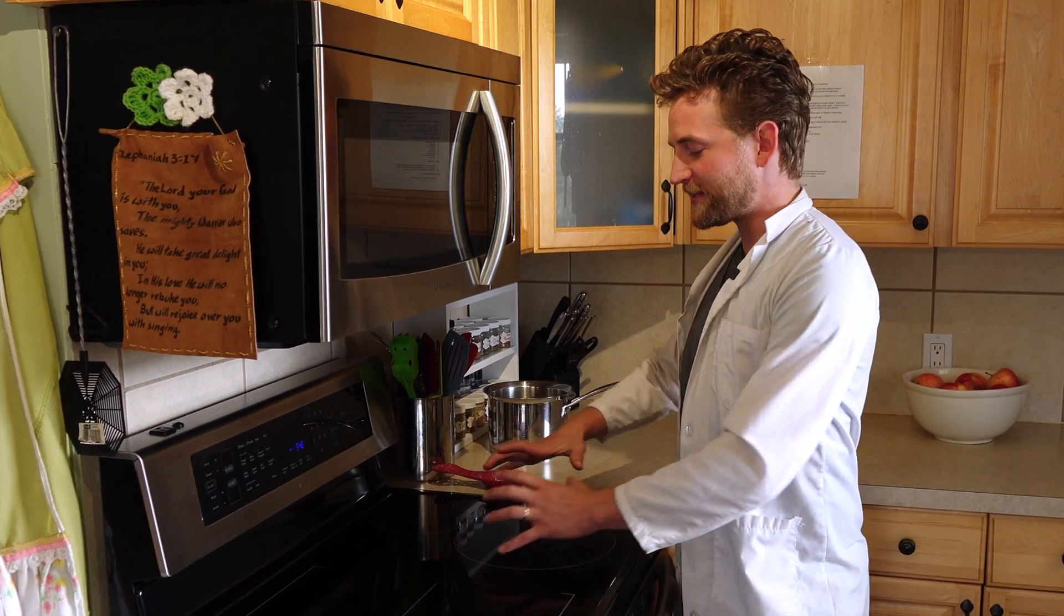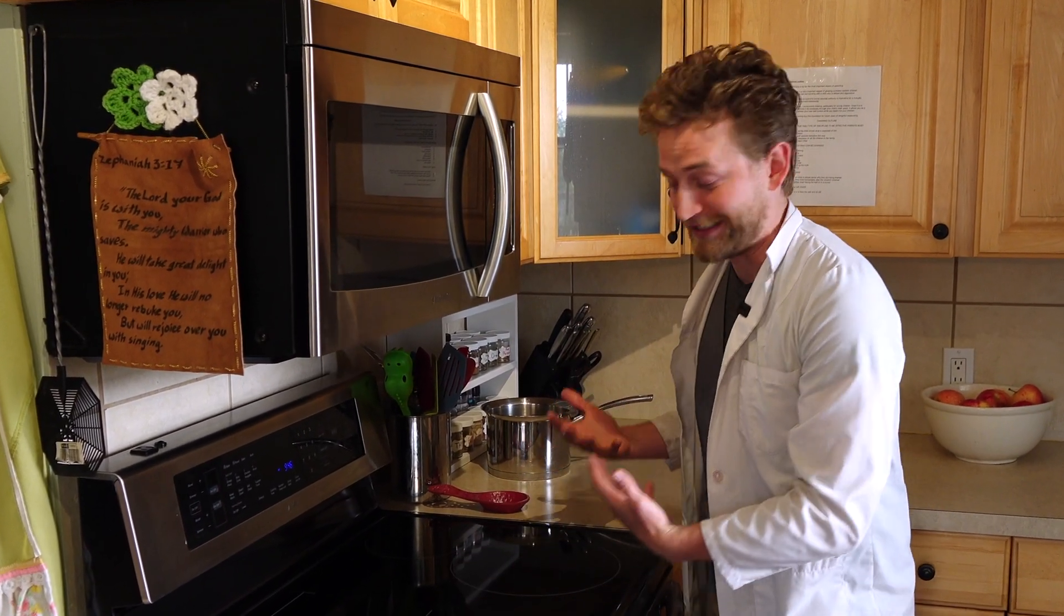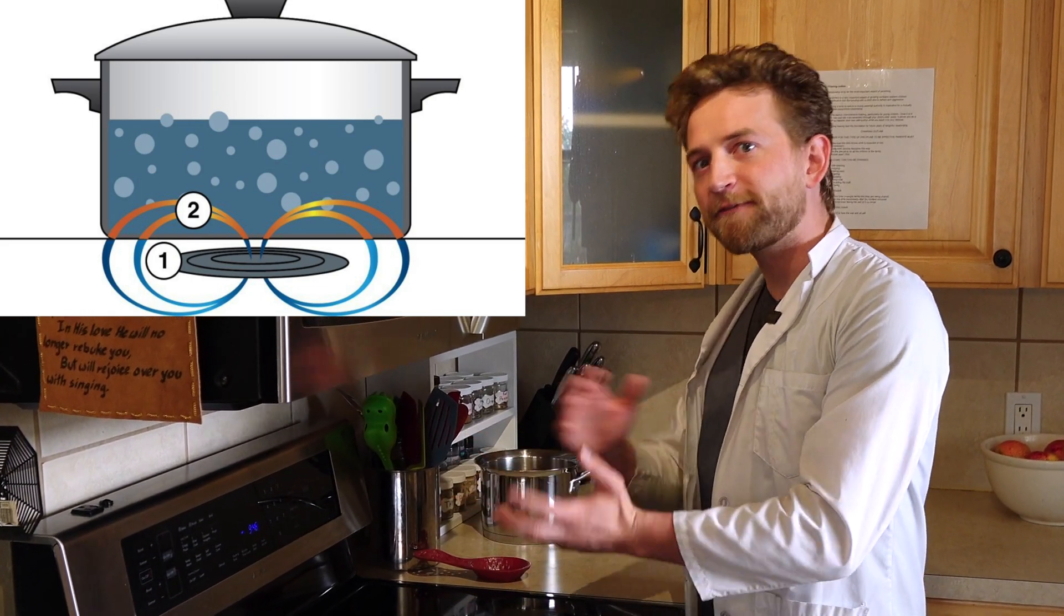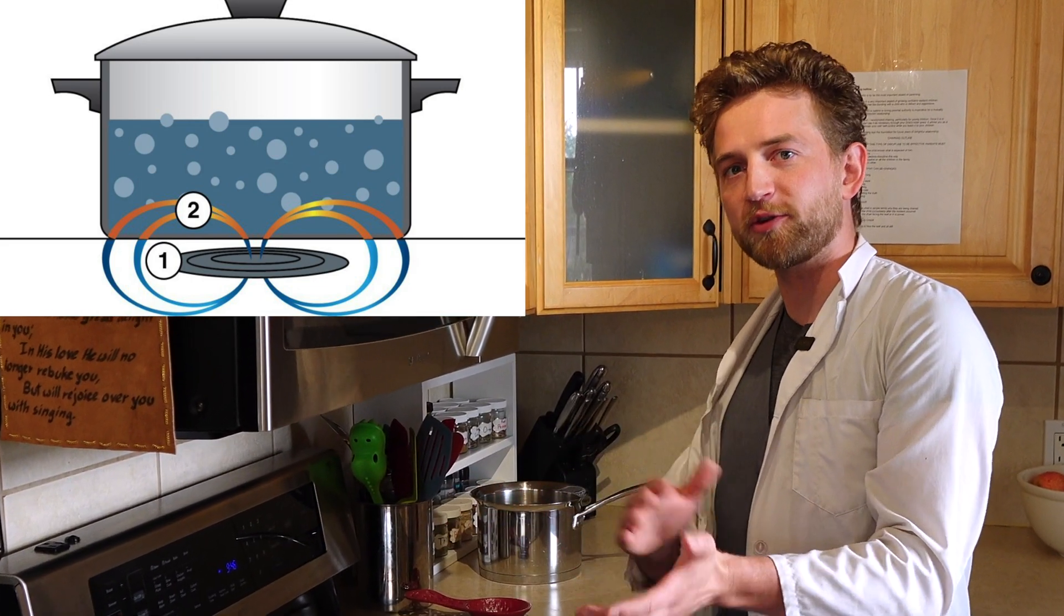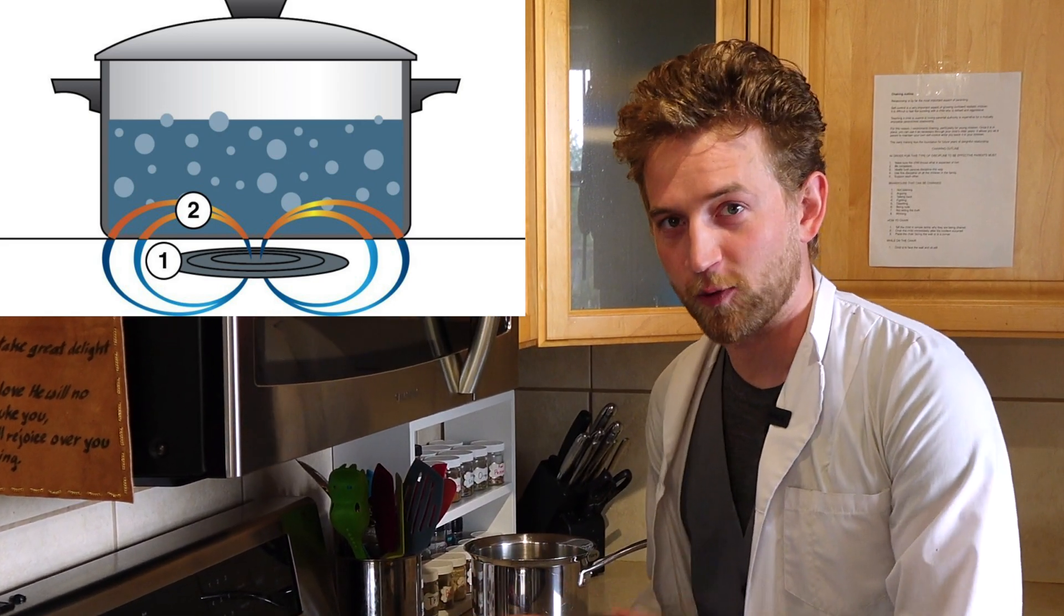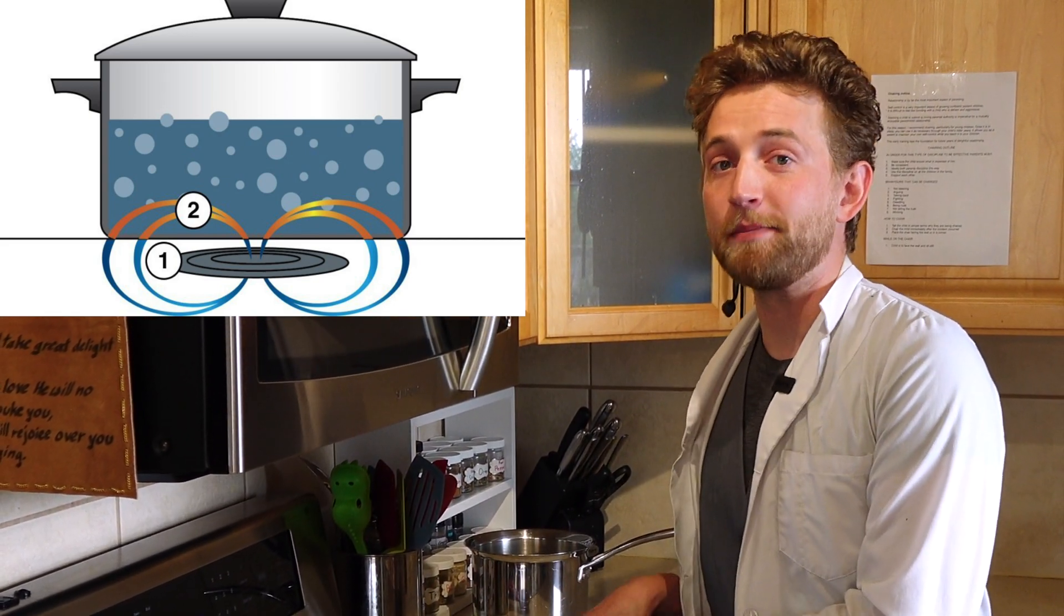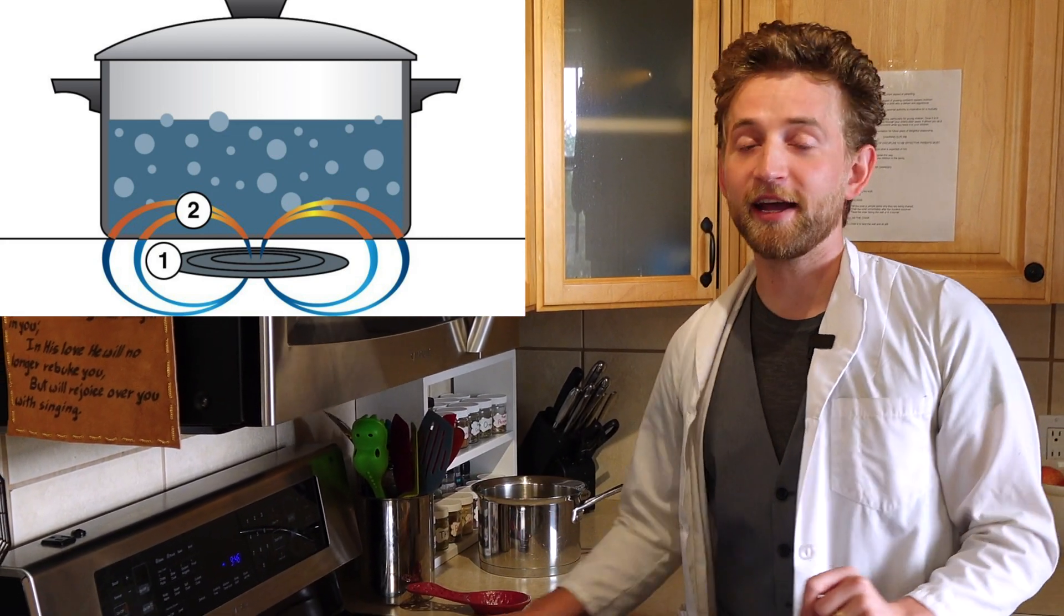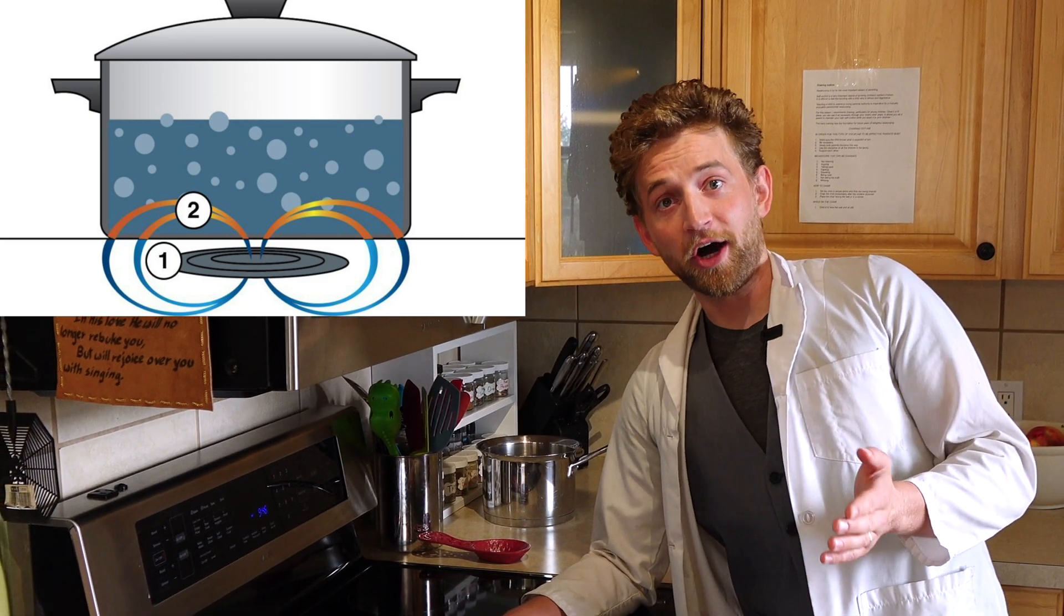What that means is this magnetic field, which I can't see, which is existing right here, is flipping poles north, south, north, south, north, back and forth, really, really, really, really, really quickly. This is only producing a magnetic field at the moment, which means that I can touch it, I can lean on it, and it's never going to get hot.